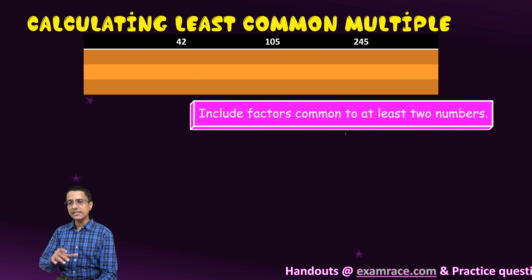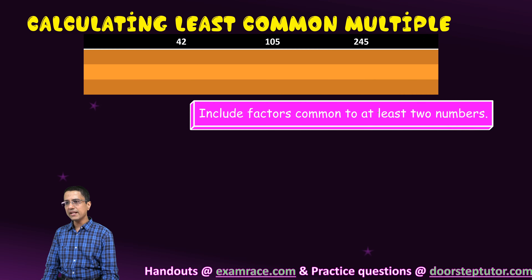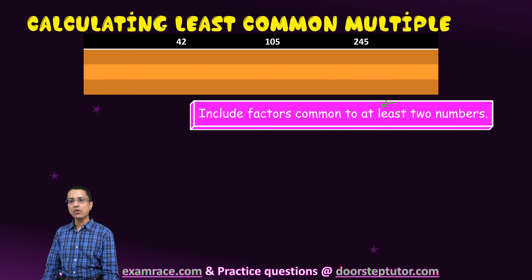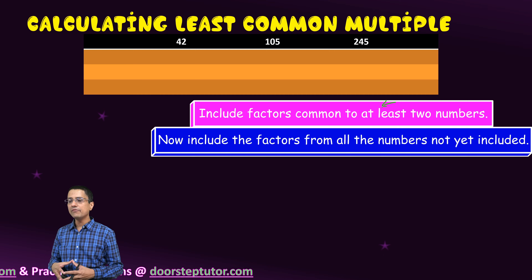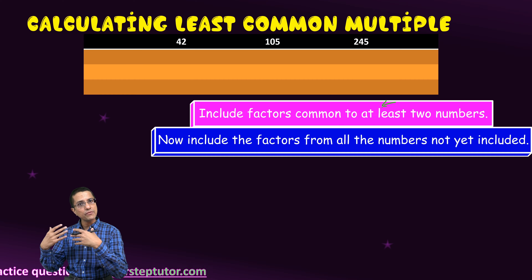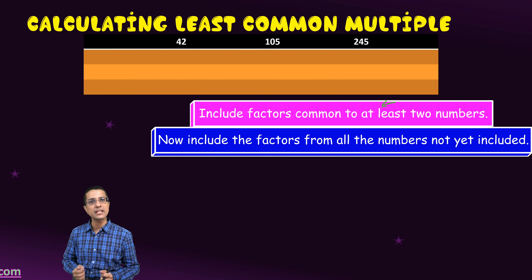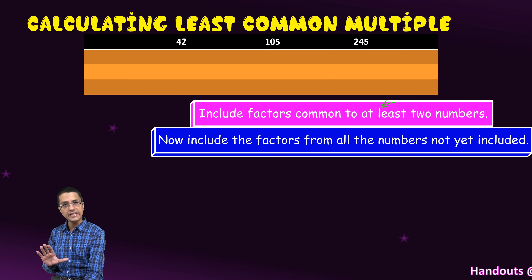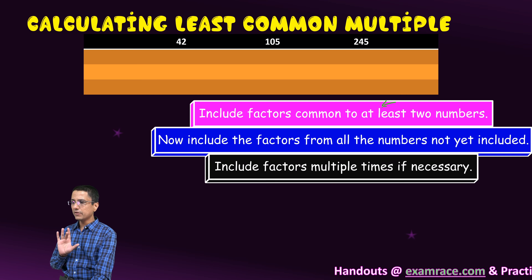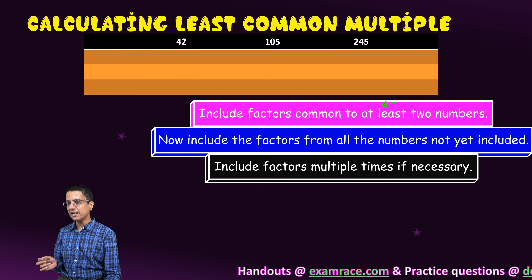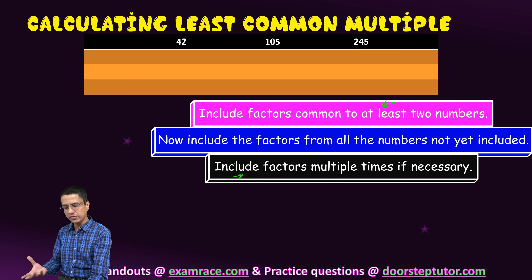Let us look at the summary of this process. We include factors common to at least 2 numbers first. Then whatever factors were left in each of the numbers, we include those as well. If a factor has to be included multiple times, we do that too. That was the process of finding the LCM of a number.